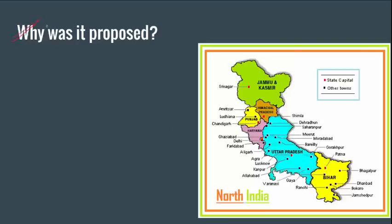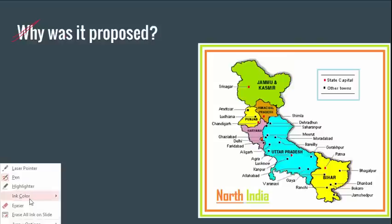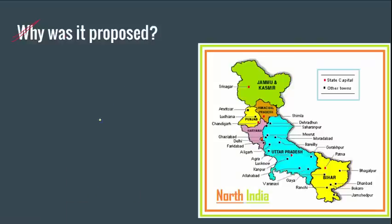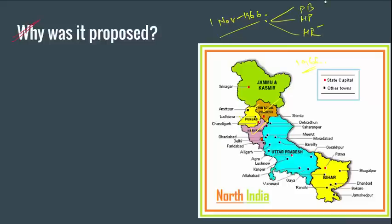Why was it proposed? In 1966, before the trifurcation, this entire region — Himachal Pradesh, Punjab, and Haryana — was Punjab. On 1st November 1966, Punjab was trifurcated into three states: Punjab, Himachal Pradesh, and Haryana. Himachal Pradesh was a Union Territory at that time and was made a state later.